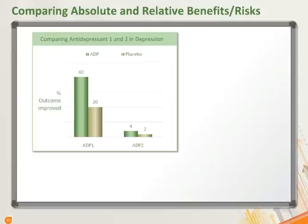Let's compare the interpretation of absolute and relative benefits and risks. Here we compare two studies, one with antidepressant 1 or ADP1, and the other with antidepressant 2 or ADP2, for the outcome, which is improvement in depression.